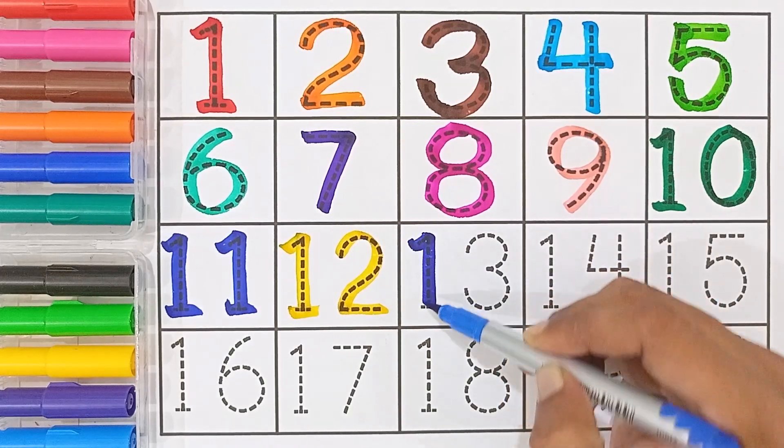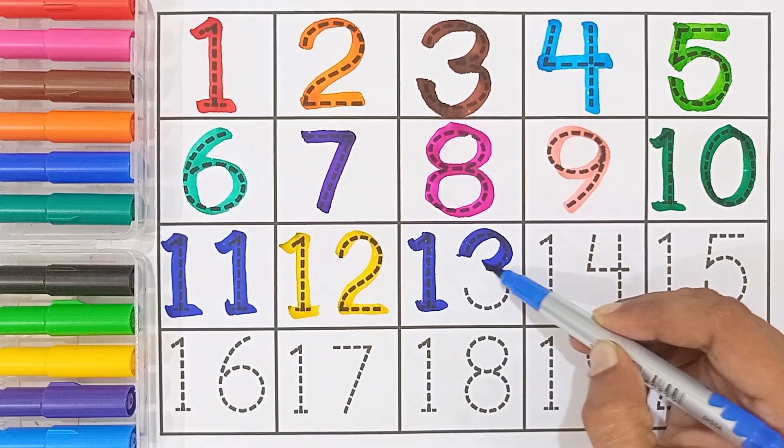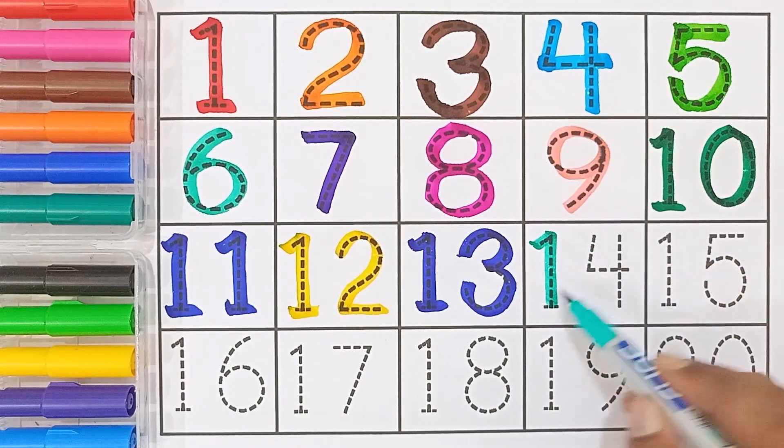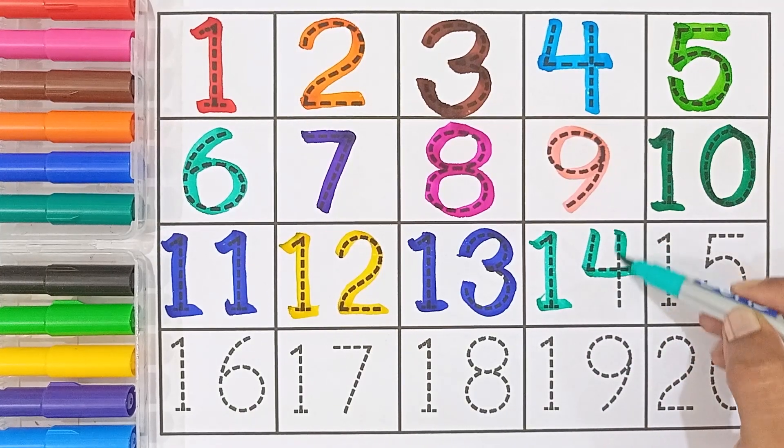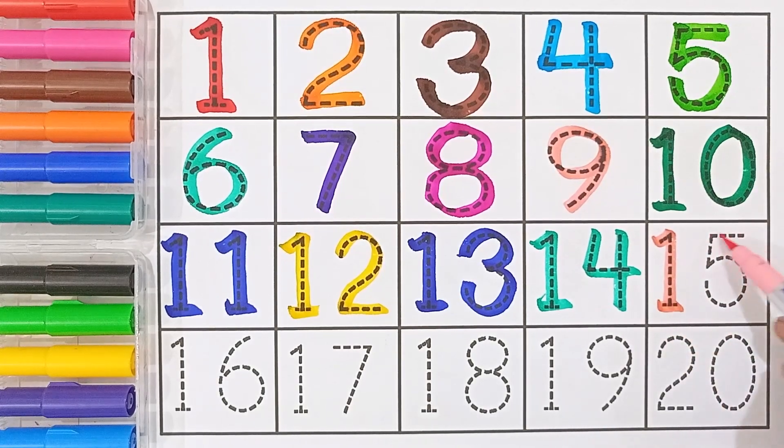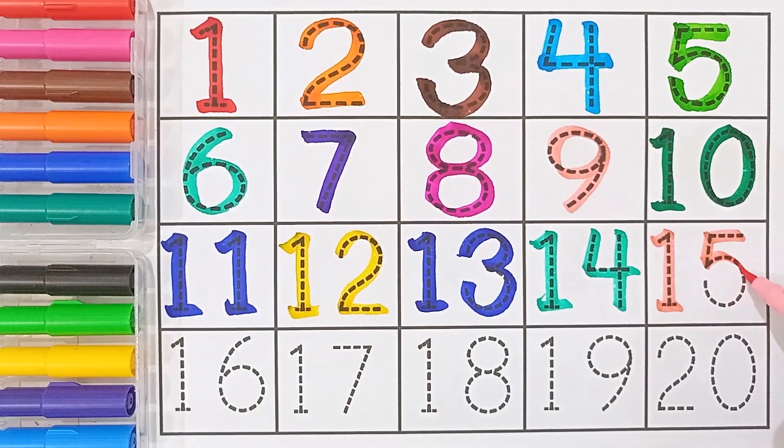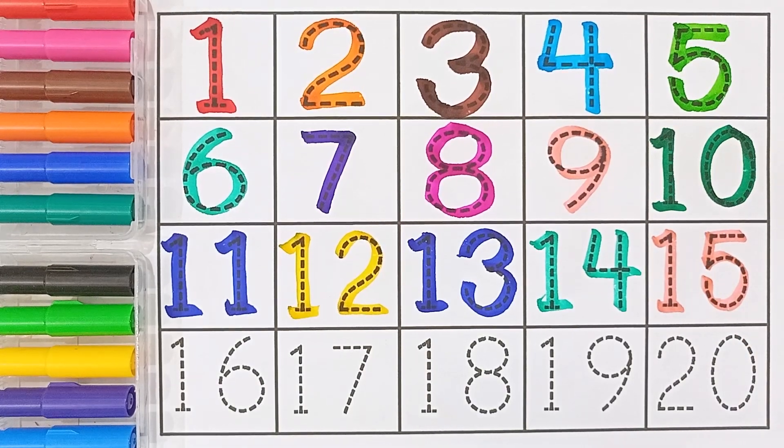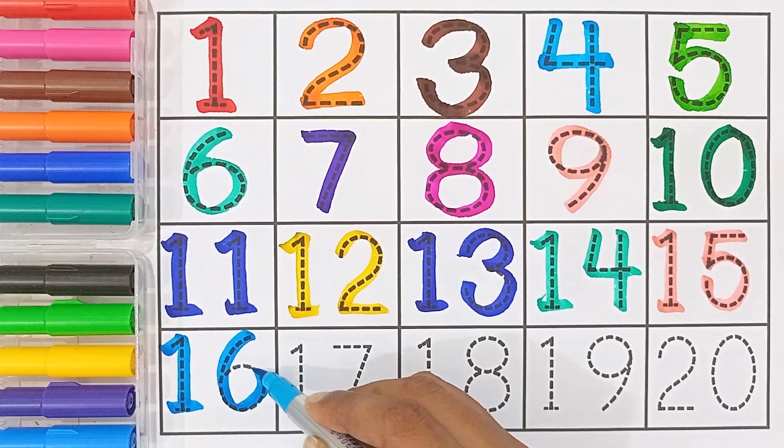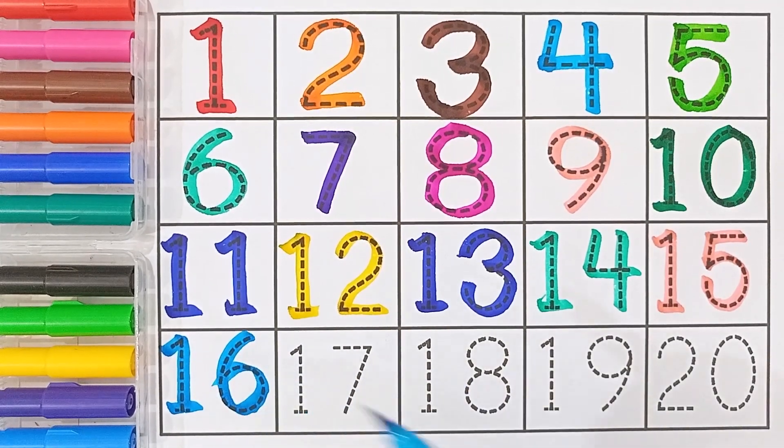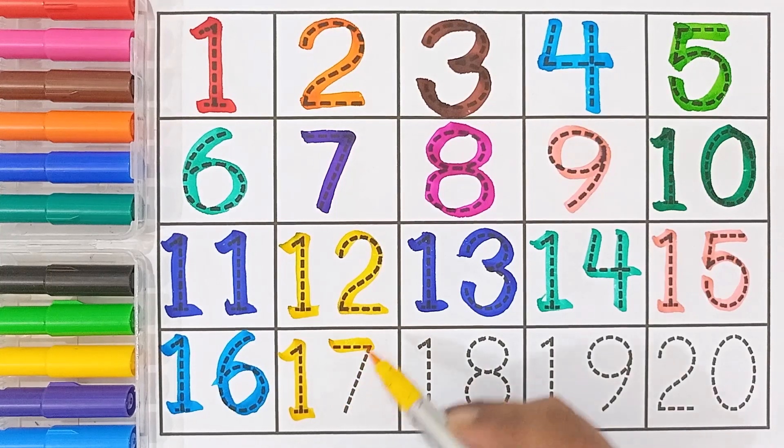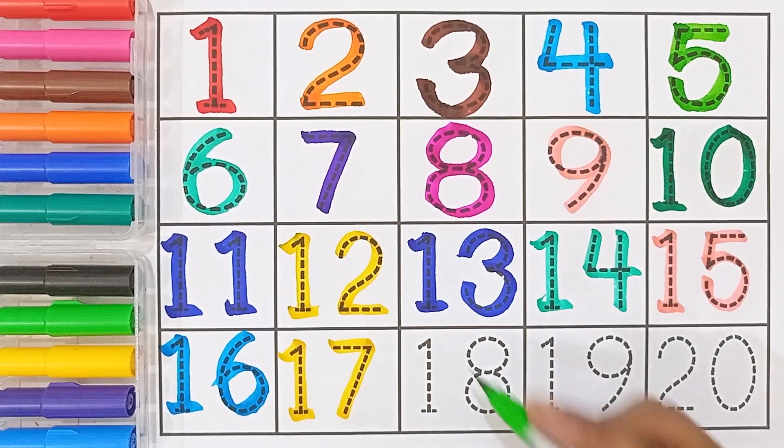Thirteen. Thirteen. Fourteen. One and four, fourteen. Fifteen. Fifteen. Sixteen, one and six. Sixteen. Seventeen, one and seven. Seventeen. Eighteen.